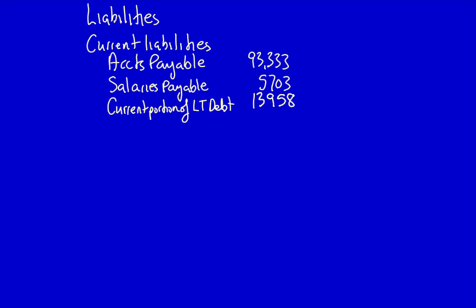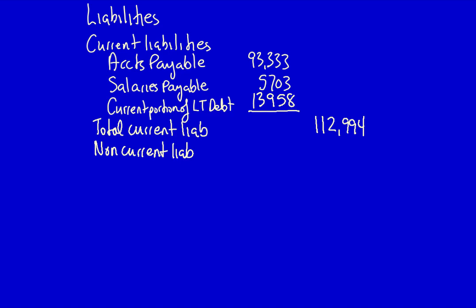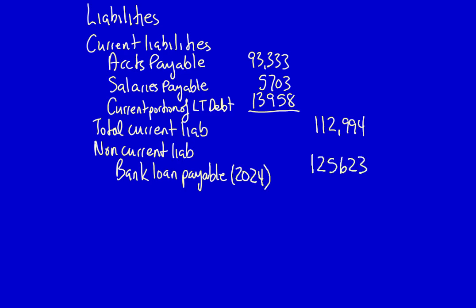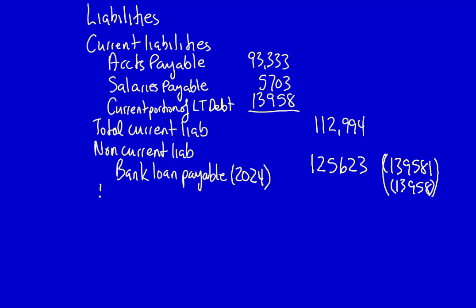That was the last of the current liabilities. We now have a subtotal — total current liabilities — equal to $112,994. Our next heading is non-current liabilities. We only have one: the bank loan payable due in 2024. The total of this bank loan is $125,623, which is the $139,581 of the original bank loan less the $13,958 current portion. Because there is only one non-current liability, I can move directly into total liabilities, which is $238,617.